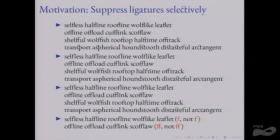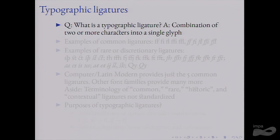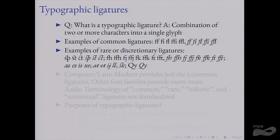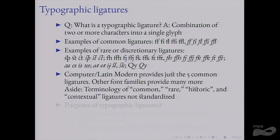To recap: a typographic ligature is a combination of two or more characters into a single glyph. The five common ligatures are fi, fl, ffi, ffl, ff, and their italic versions. Then there are also so-called rare ligatures — from two particular fonts there's a whole bunch of them, including a QY ligature which I've never understood the purpose of. Computer Modern and Latin Modern have just the five common ligatures, but other font families provide many more.